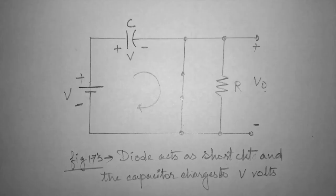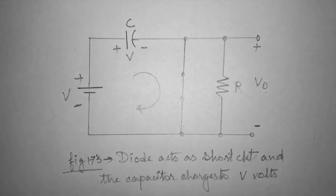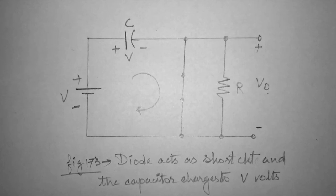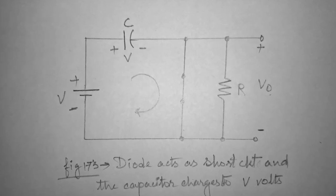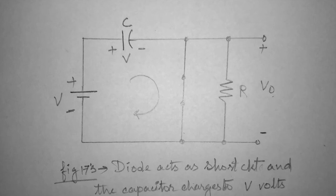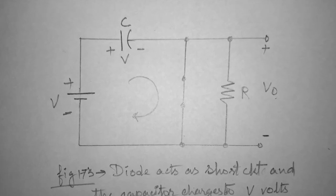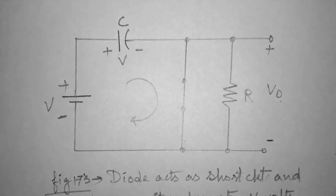Now, let us discuss the working principle of a clamper circuit. During the positive half cycle, that is, from zero to half of the time period, the network will appear as shown in this figure 17.5 with the diode in on state, or shorting out the effect of the resistor.